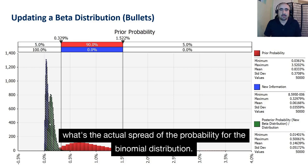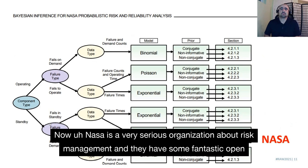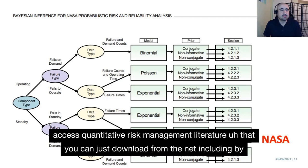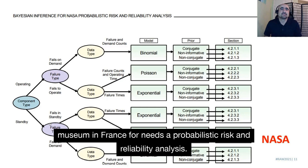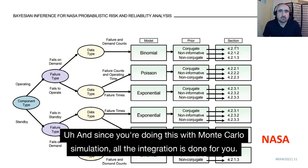NASA is a very serious organization about risk management and they have some fantastic open-access quantitative risk management literature you can download from the net, including Bayesian inference for NASA probabilistic risk and reliability analysis. And since you're doing this with Monte Carlo simulation, all the integration is done for you.